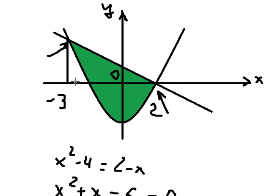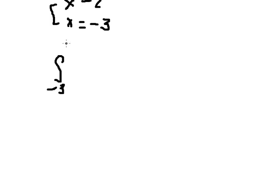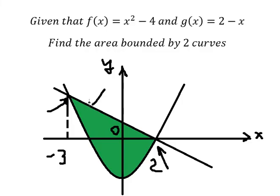So for this one we have the integration from negative 3 to positive 2. We know that this line here is the upper function, and the curve is the lower function.